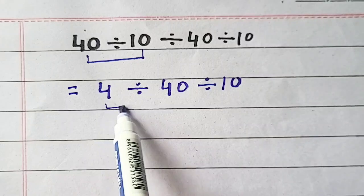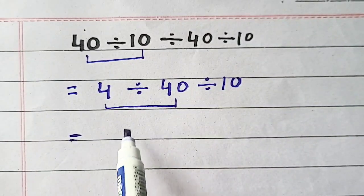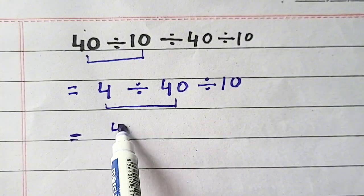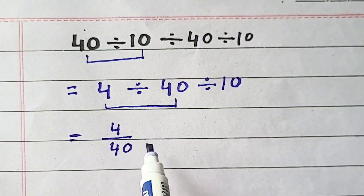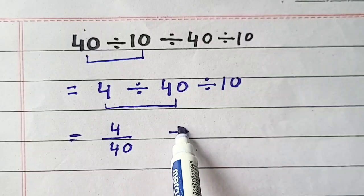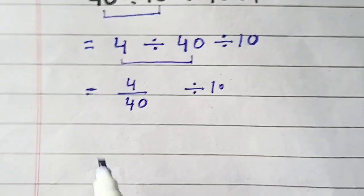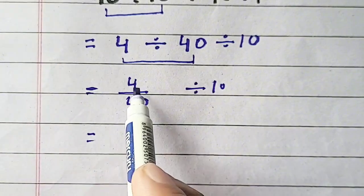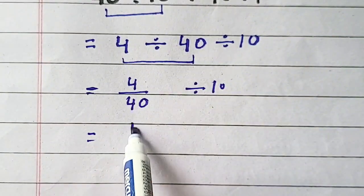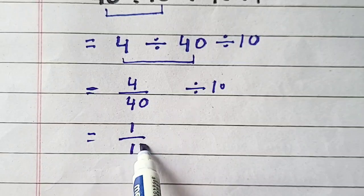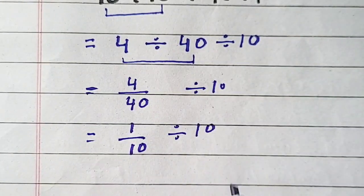Now we will solve 4 divided by 40. So it can also be written as 4 divided by 40 divided by 10. So if we simplify 4 divided by 40 it will become 1 by 10 divided by 10.